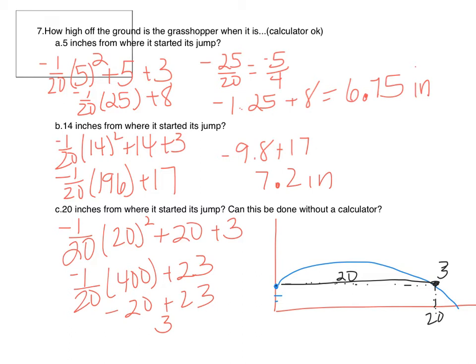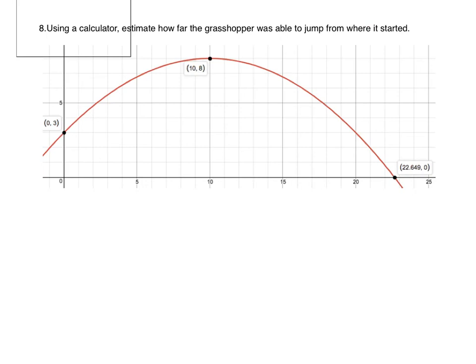Number 8 asks us to re-sketch the graph with more valid points. We have the vertex at (10, 8), the point (5, 6.75), and the point (14, 7.2). It's not perfectly accurate without graph paper, but with graph paper we could draw a nice parabola.